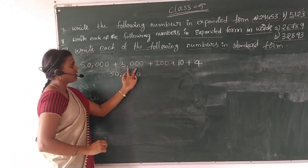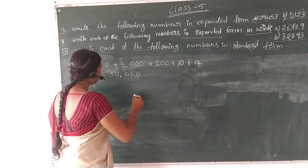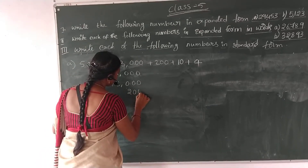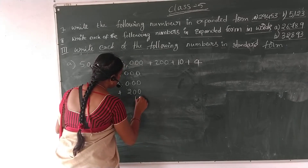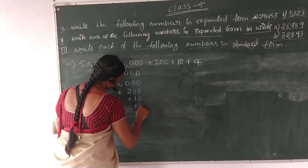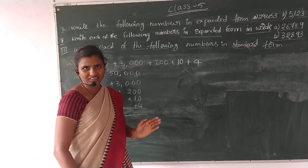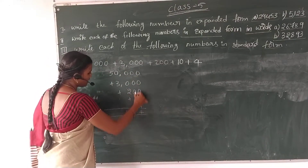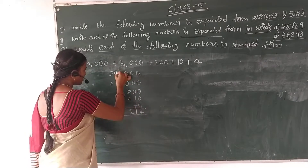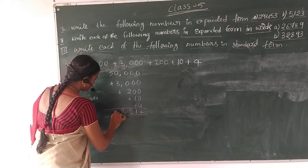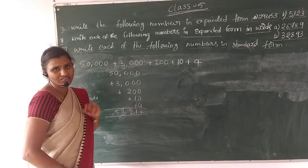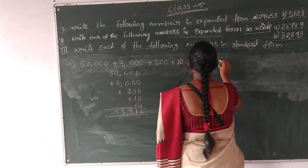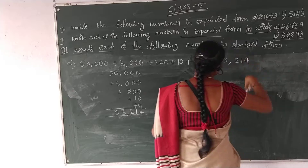50,000 plus 3,000 plus 200 plus 10 plus 4. Add all these numbers: ones place is 4, tens place is 1, hundreds place is 2, thousands place is 3, ten-thousands place is 5. Keep a comma after 3 digits: 53,214.